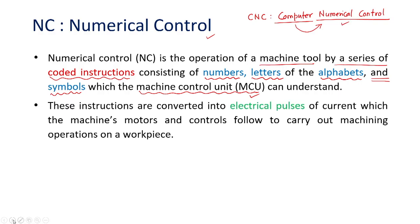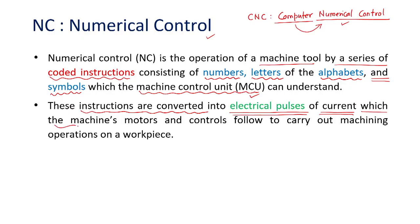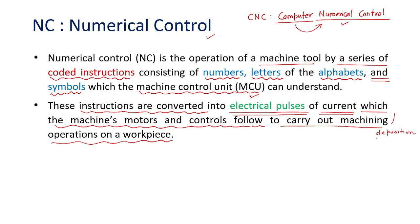These instructions are converted into electrical pulses of current. All CNC machine tools are equipped with DC or AC motors, and to operate these motors we need to generate electrical pulses. These electrical pulses are based upon the coded instructions given by the controller. The machines, motors, and controls follow these electrical pulses to carry out machining operations on the workpiece — in additive manufacturing it may be the deposition operation, in welding processes it is a welding operation.